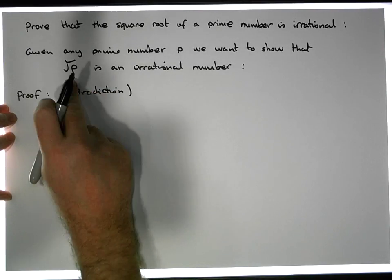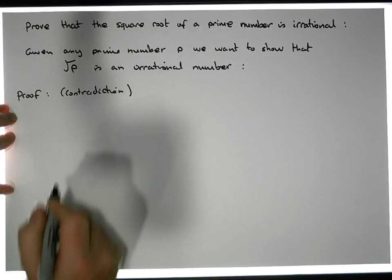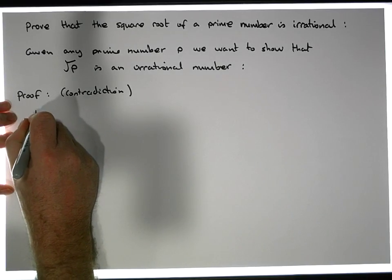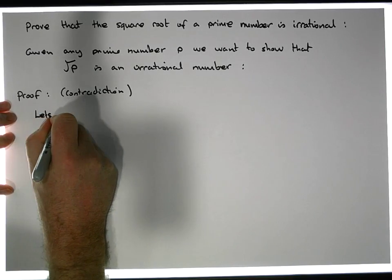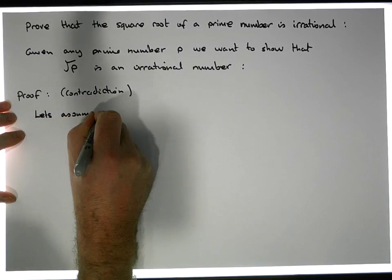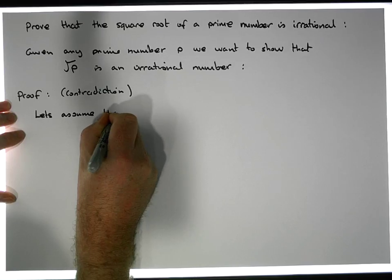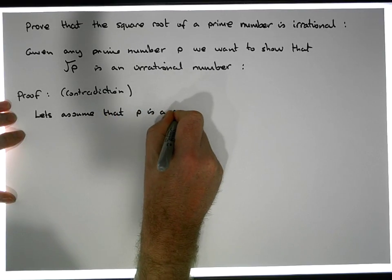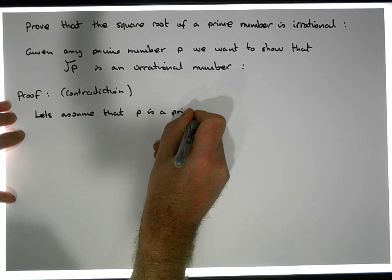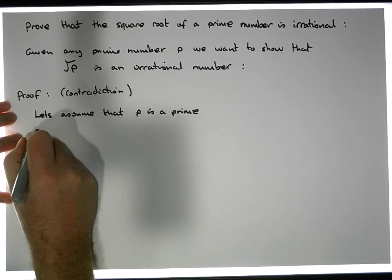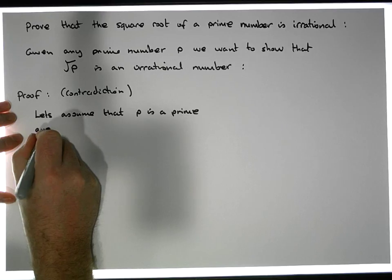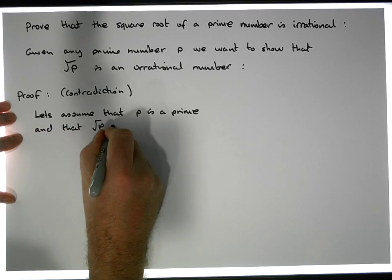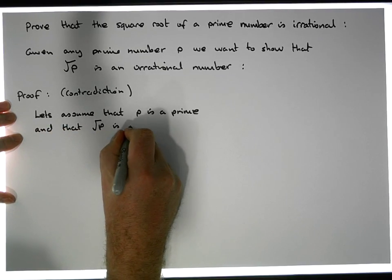So let's assume — first of all, that P is a prime number, and that the square root of P is rational.